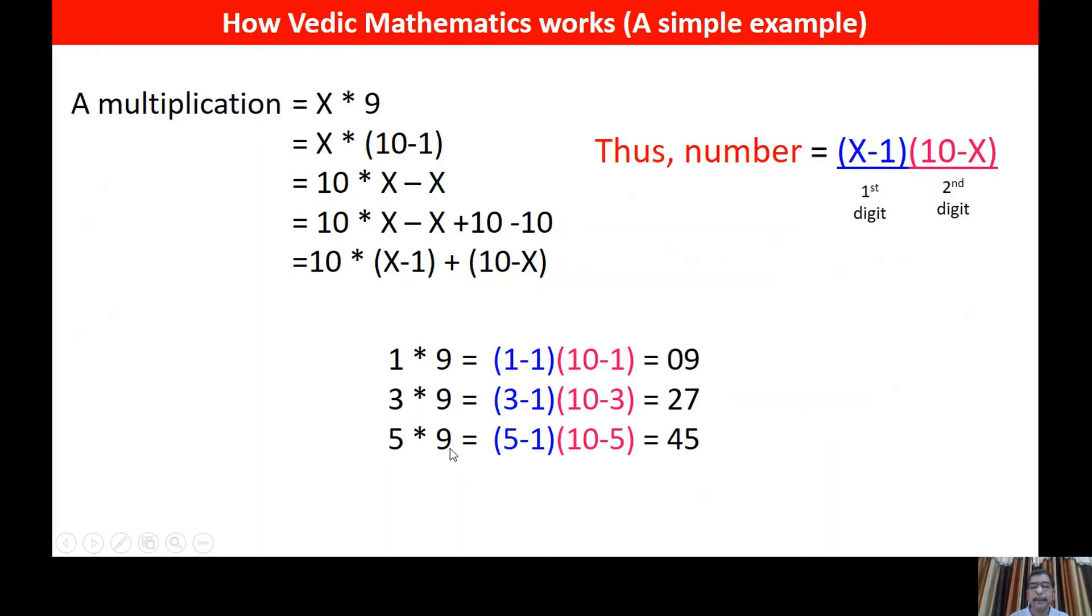Now 3 into 9, so X is 3. So X minus 1 equals 2, 10 minus X, 10 minus 3 actually becomes 7, so 27. Similarly 5 into 9, 5 minus 1 is 4, 10 minus 5 is 5. Similarly 7 into 9, 7 minus 1 is 6, 10 minus 7 is 3. Similarly 9 into 9.